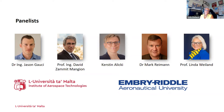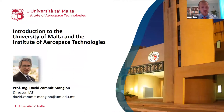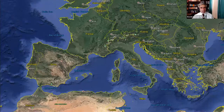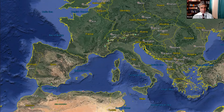Thank you everyone for your introductions. I'd now like to hand over to Professor David Zammit-Mangion to give us an introduction to the University of Malta and the Institute of Aerospace Technologies. Malta is an island, a member state of the European Union, situated in the center of the Mediterranean just south of Italy and Sicily — shown as a little yellow dot just south of Sicily, to give you an indication of where we are geographically.